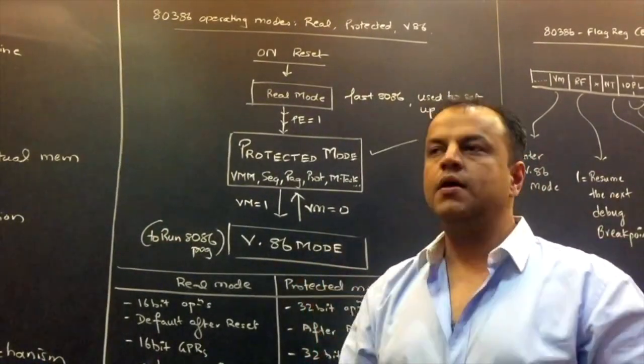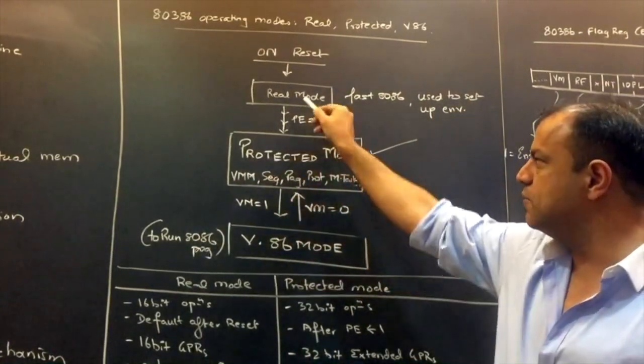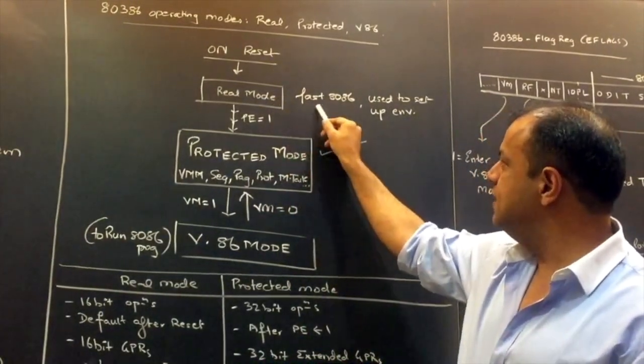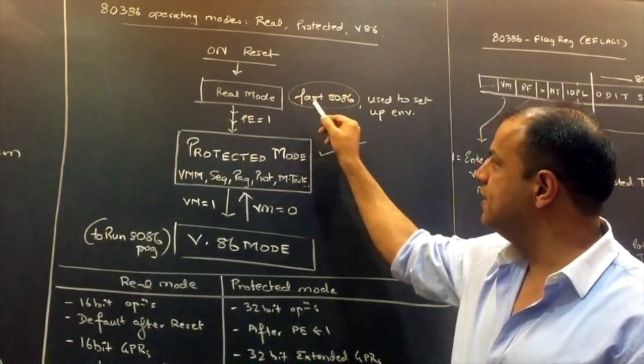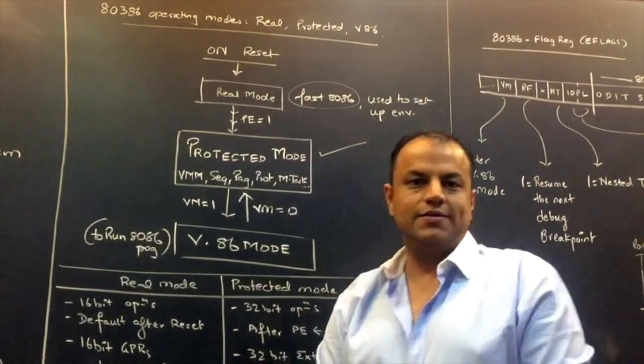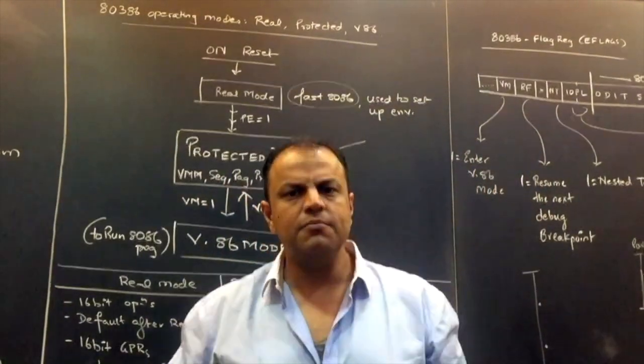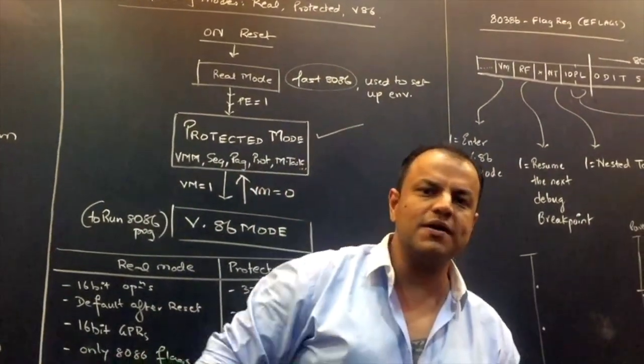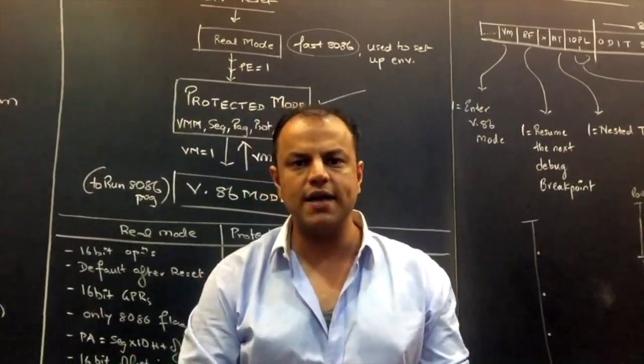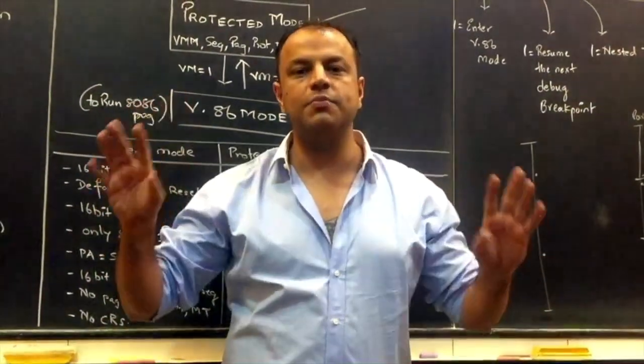Then your question is, what is the point of real mode? In real mode, 386 doesn't behave like a 386 at all. It behaves like an 8086. It just works like a fast 8086. Why did I say fast? Because 8086 used to operate at 6 megahertz. 386 operates from 16 to 33 megahertz. So much higher frequency. But other than that, it is nothing else but an 8086.